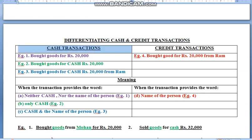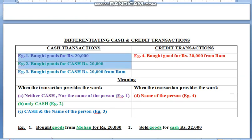I have taken certain examples on how to identify cash and credit transactions. The first example: Bought goods for Rs. 20,000. The second: Bought goods for cash Rs. 20,000. And the third: Bought goods for cash Rs. 20,000 from Ram. You might have noticed the difference between all three examples. In the third example, we notice that we have the word 'cash' as well as the name of the person. So if we have the word cash and the name of the person, this represents a cash transaction.